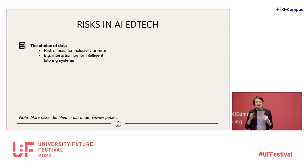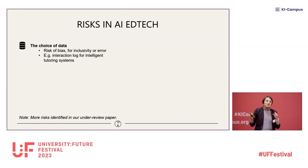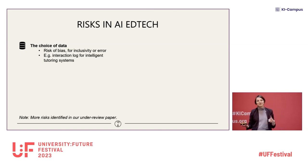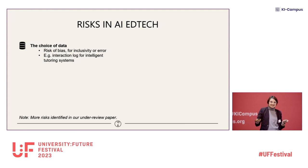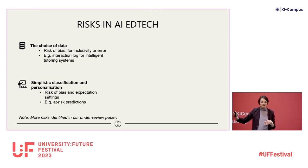We identified several risks in the use of AI educational technologies for students with disabilities — I summarize to keep it concise. The first risk is the choice of data. We need to be careful about whether data could correlate with disabilities. Interaction log data is often exciting because it seems to focus on behavior rather than personal characteristics. But if the platform is not accessible, then interaction log data is likely to be different for someone with a disability, and an intelligent tutoring system may not work for them.